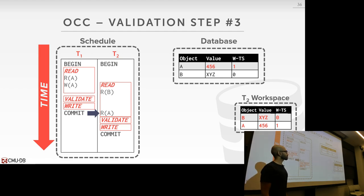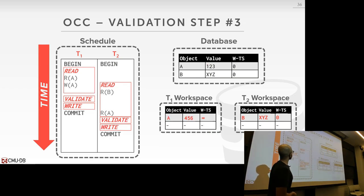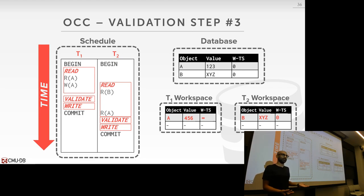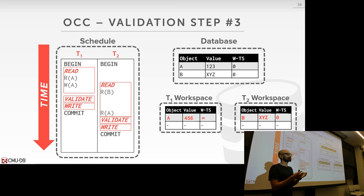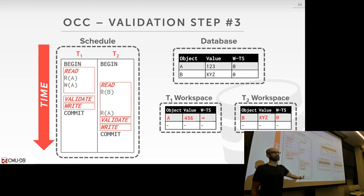Question: when are timestamps set to zero, infinity, or a specific value? Zero is the initial write timestamp of database objects, as if a bulk-load transaction with timestamp 0 loaded them. When you write in your local copy, you set the timestamp to infinity because you haven't been assigned a real timestamp yet. When you read, you copy whatever timestamp is currently on the object. At validation, you receive an actual timestamp and replace infinity.